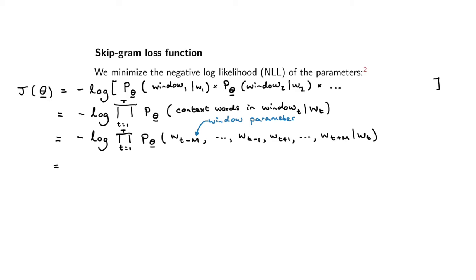This is just all the words preceding my center word and all the words following my center word, written out more explicitly. The second assumption says that the probability for each of these words in my context window is conditionally independent given the center word, which means I can write this as a product as well.